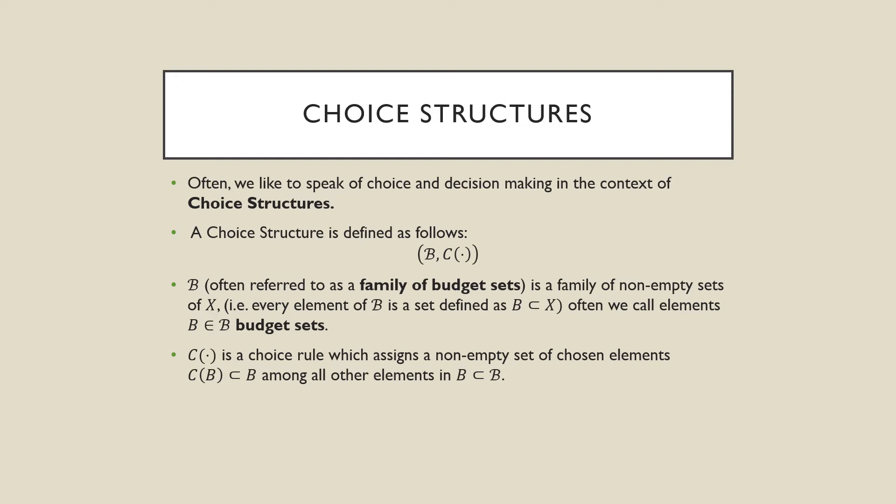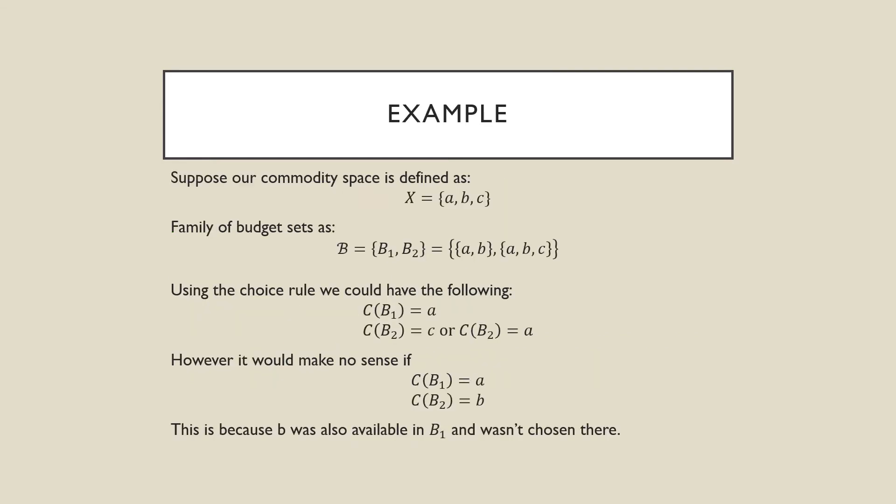So among all other elements of B in this family of budget sets — this is just a technical point. Suppose our commodity space is defined as follows where X is equal to A, B, and C. Those are our three different options. Our family of budget sets are defined as follows where B1 is equal to A and B only, capturing that subset, and B2 captures the entire commodity space as possible options to consider.